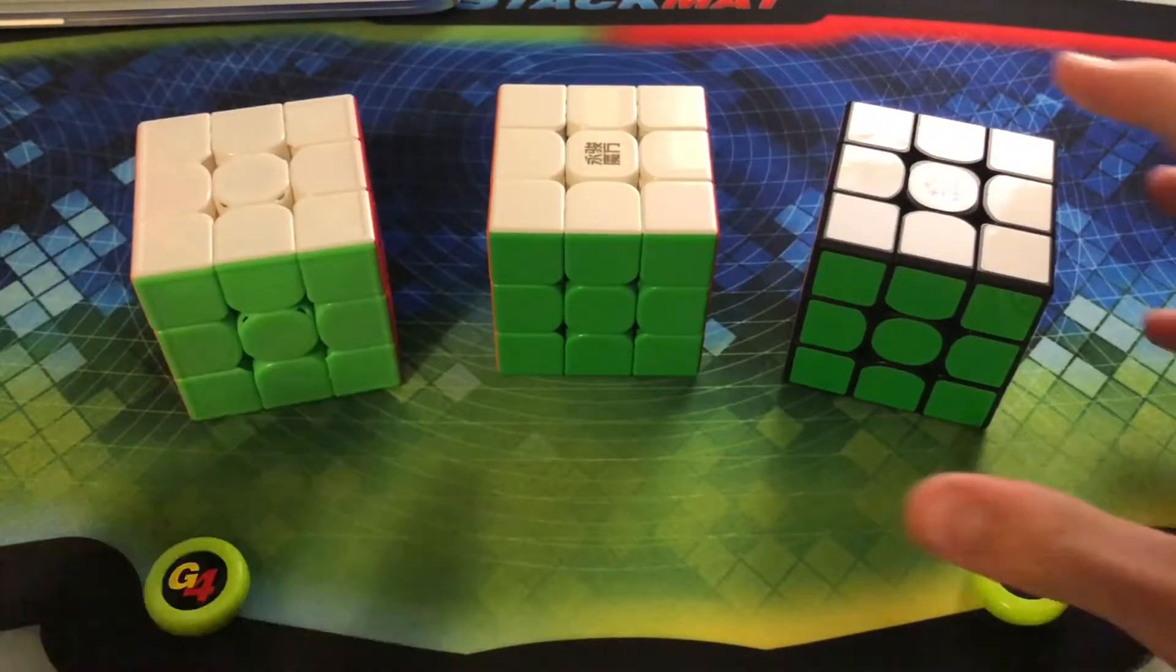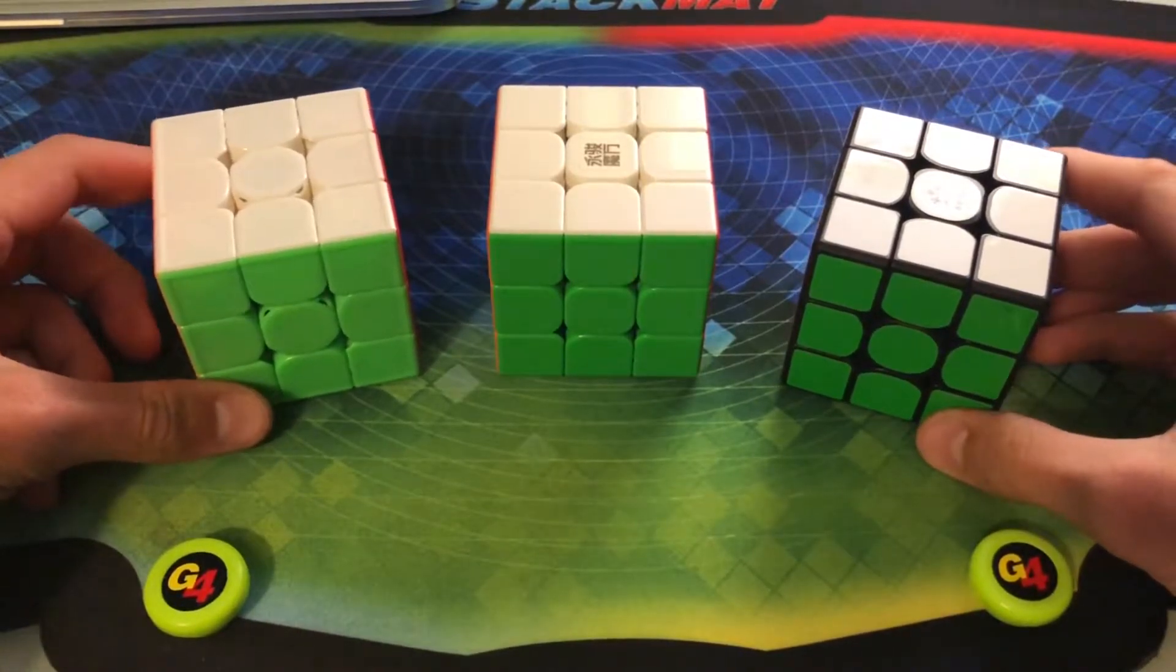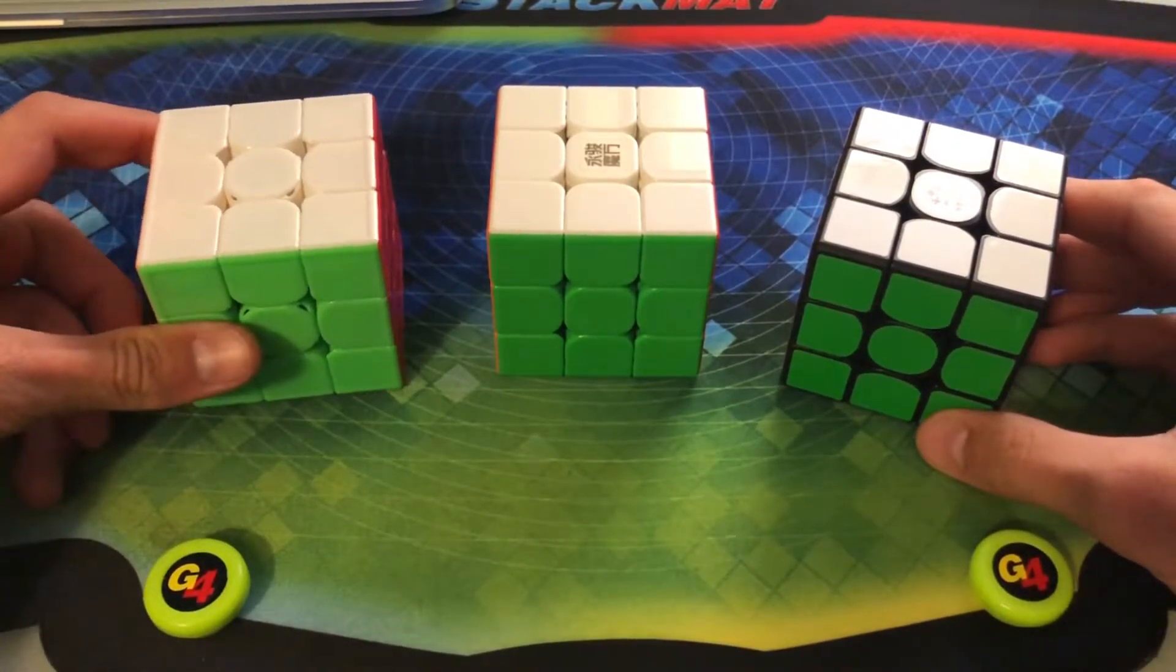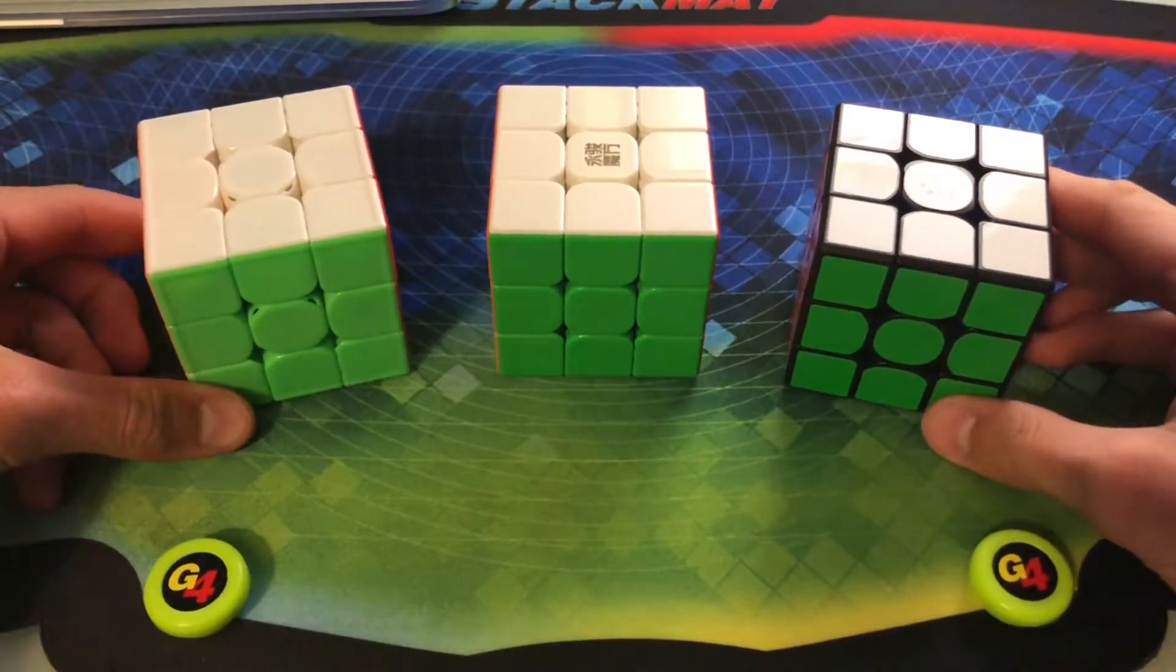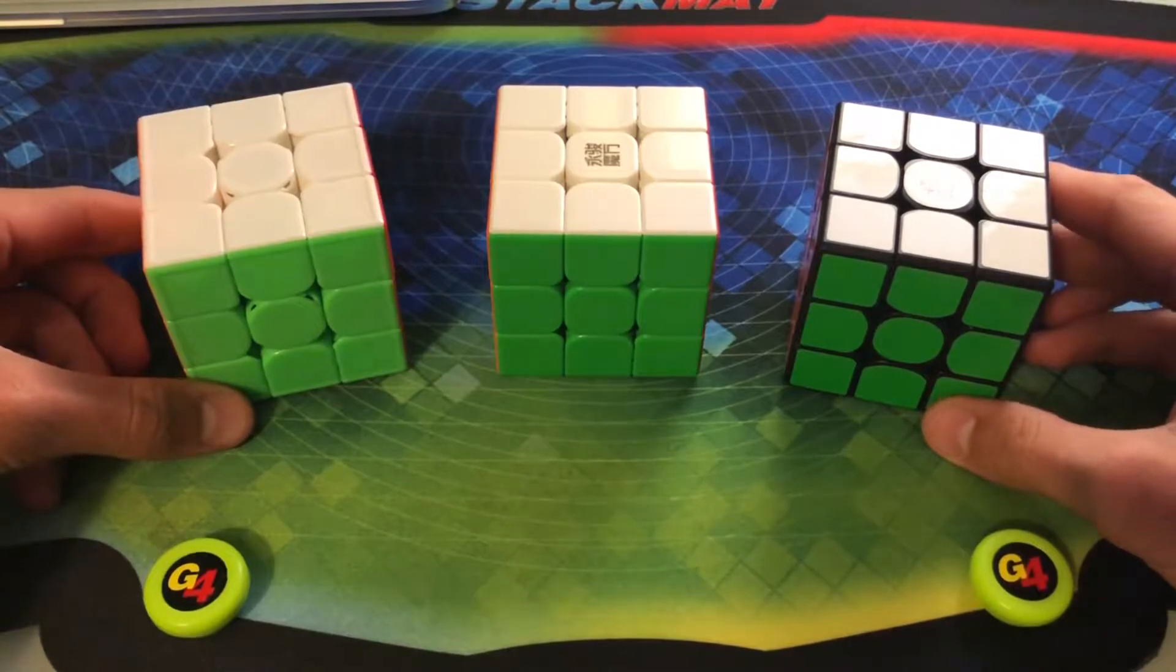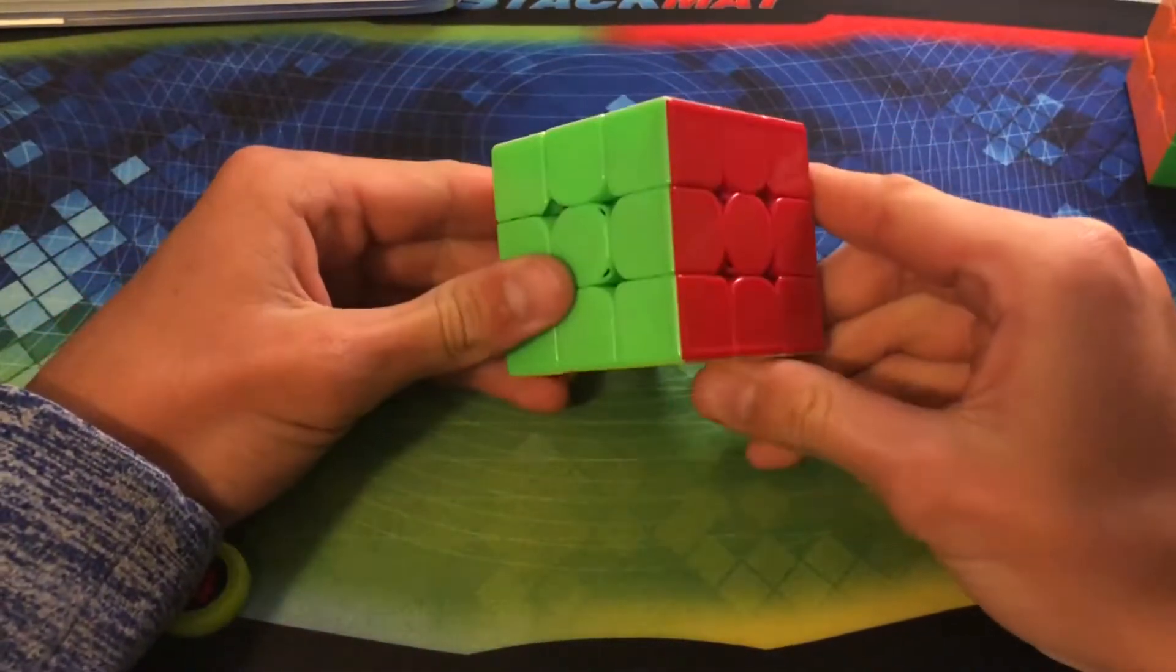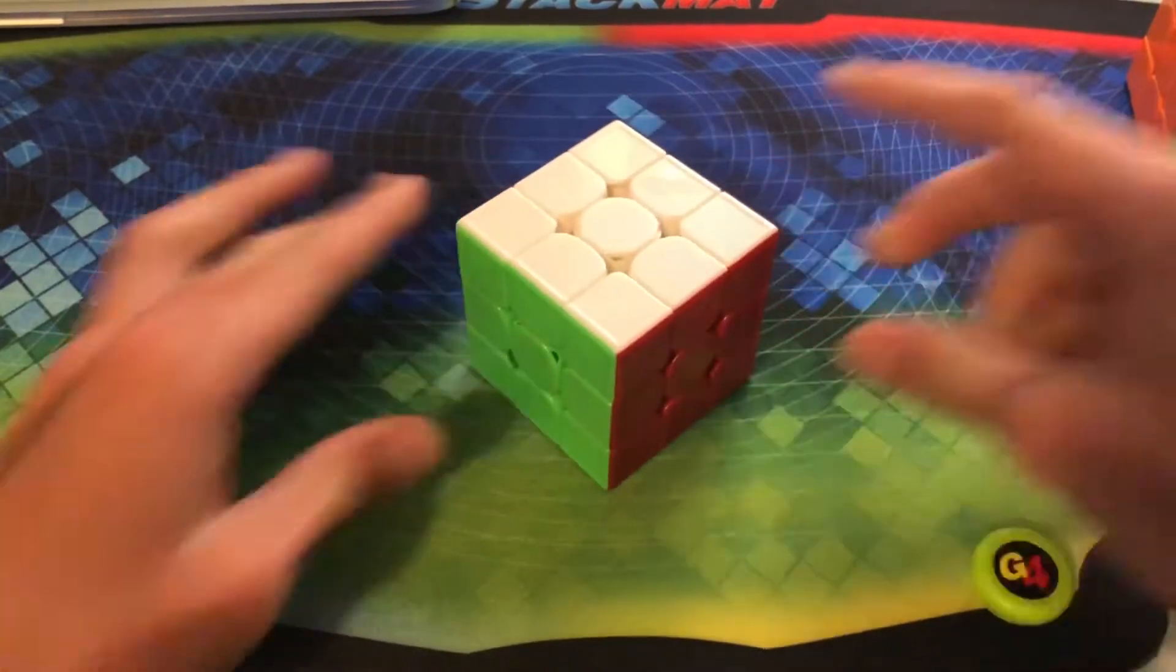So here's how it works. What we're gonna do is we're gonna do an average of 5 on each of these cubes, and the end time that we receive for our average of 5 will help us determine whether or not these cubes actually perform differently based on their price. So we'll get started with the $40-ish speed cube, which is the Weilong GTS-3M.